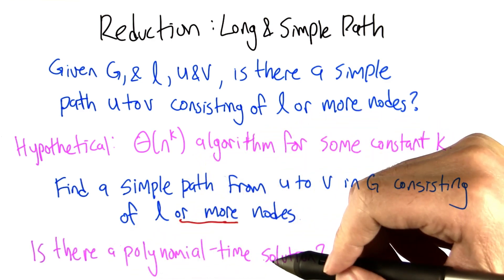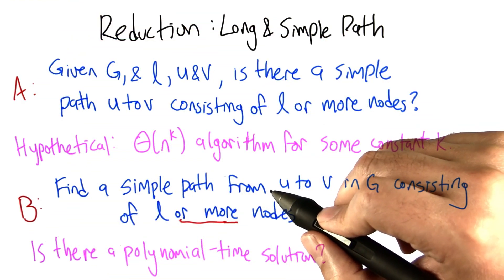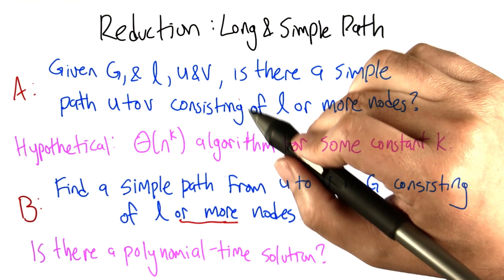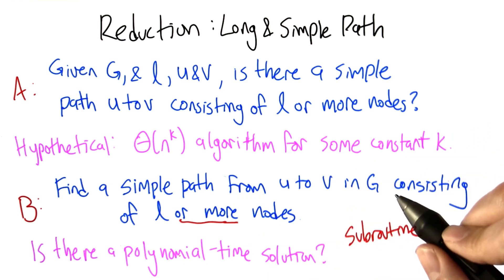And we'd like to know, is there a polynomial time solution to this problem? We'll call it problem B, assuming that there is a polynomial time solution for problem A. We can use the solution to problem A as a subroutine in solving problem B.